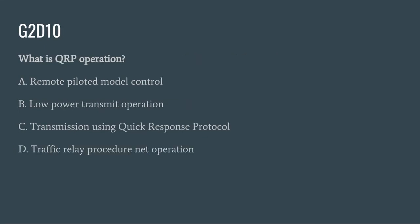G2D10: What is QRP operation? A. Remote piloted model control. B. Low power transmit operation. C. Transmit using quick response protocol. Or D. Traffic relay procedure net operation. The correct answer is B: low power transmit operation.